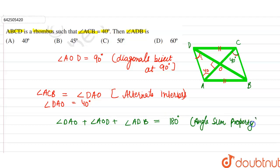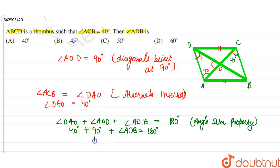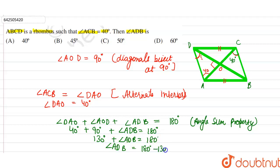So, angle DAO is 40 degrees, plus angle AOD which is 90 degrees, plus angle ADB equals 180 degrees. That gives us 130 degrees plus angle ADB equals 180 degrees. Therefore, angle ADB is equal to 180 minus 130, which is equal to 50 degrees.